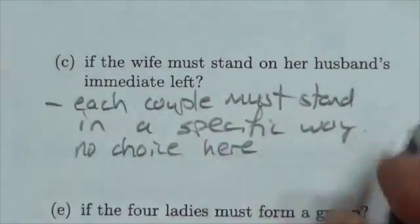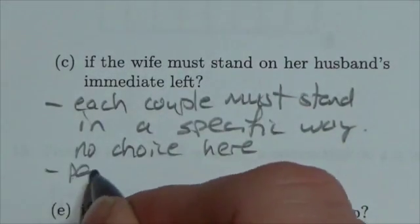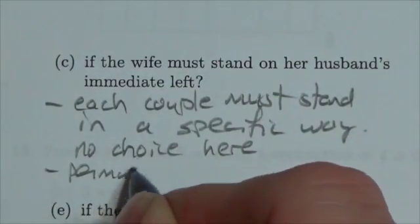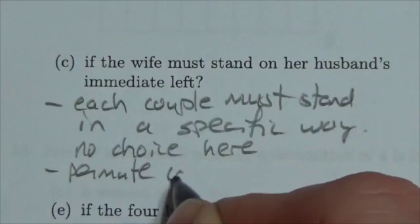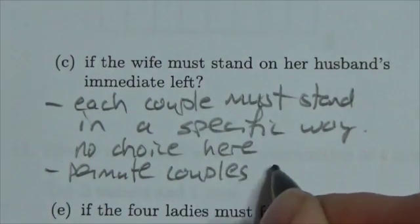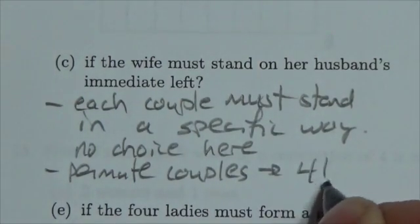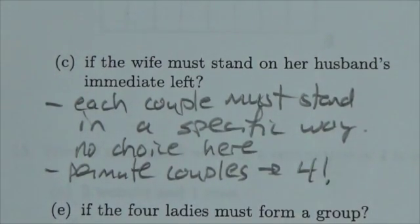So all we have to do is permute the couples. Since there are four couples, it's just going to be four factorial. That's it.